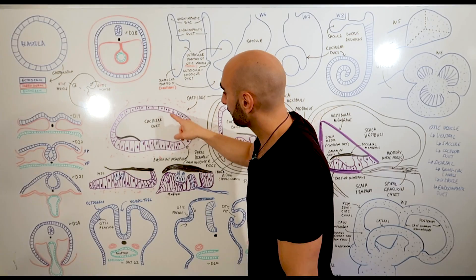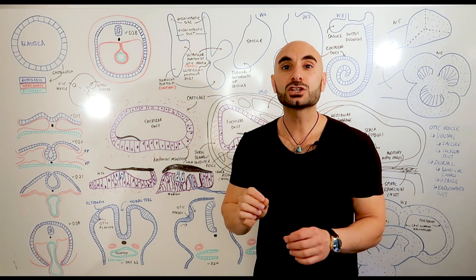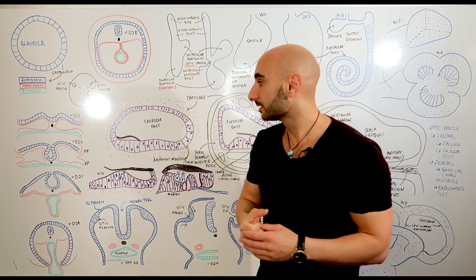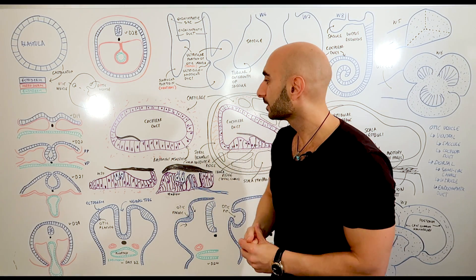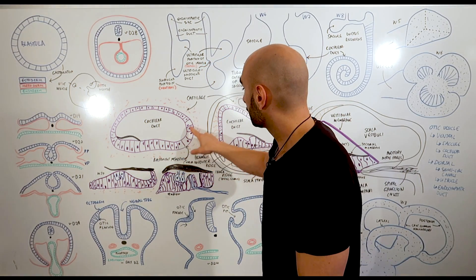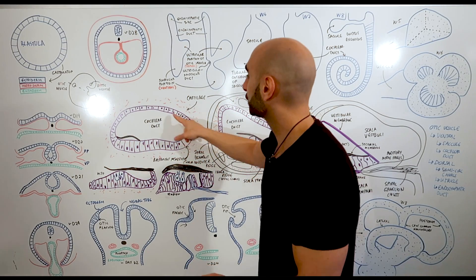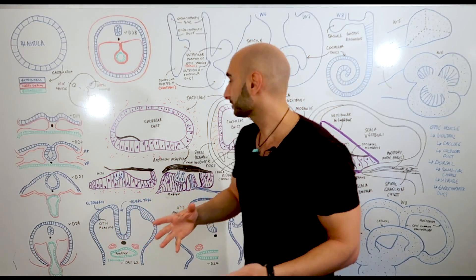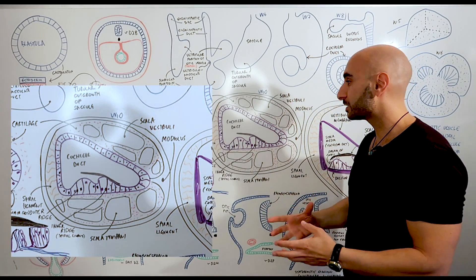So here we have the cochlear duct and the cells of the cochlear duct are initially not differentiated. They are random cells waiting to have a role. In this stage we have the basement membrane, but none of these cells are actually differentiated into anything. By week 10 we have some differentiation happening.